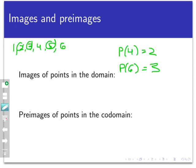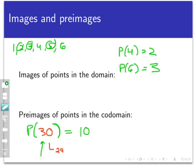Now what about preimages? A preimage of a point in the codomain: we pick an integer from the codomain and ask what we could put into the process to get that integer. For example, let's take the number 10. It's certainly in the codomain. What is a preimage at that point — what could I put into the function from the domain to give me 10 as output? That's a harder question. It turns out that if I put in 30 and count the primes less than or equal to 30, I get 10. But I could also put in 29, and that also gives an output of 10. So the number 10 has at least two preimages: both 30 and 29.